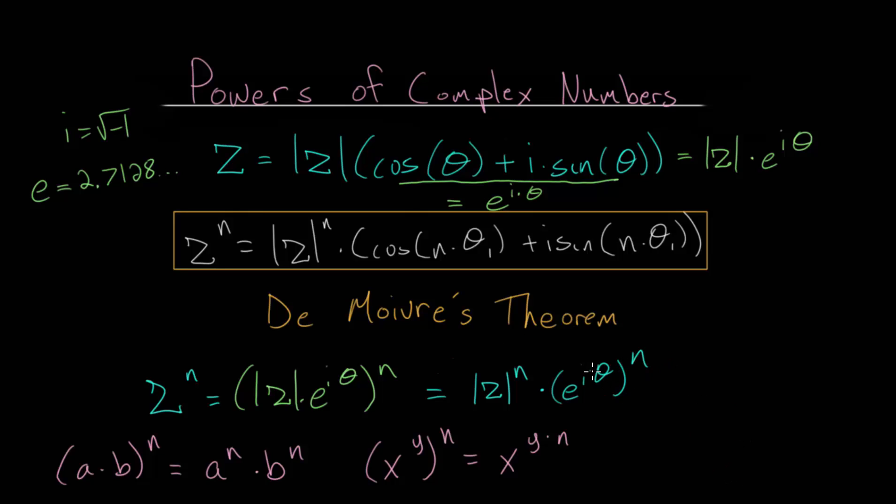But here we have an exponent raised to an exponent, so we can apply this second rule. And we can rewrite this as the magnitude of z raised to the nth power multiplied by this exponent to an exponent. So we will multiply the two exponents. We get e to the i times theta times n, or I'll just write times n times theta.